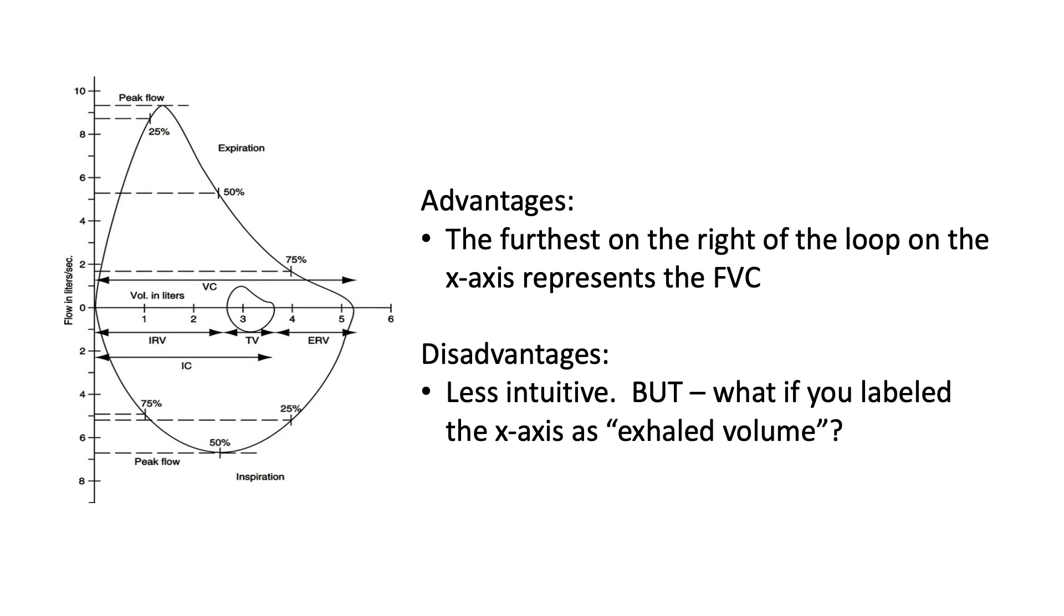And finally, let's consider the zero on the left side of the graph. The advantage here is that now with this display, the furthest point on the x-axis where the flow volume loop crosses the x-axis represents the forced vital capacity. That's the volume in the lung that can be breathed out from total lung capacity all the way down to residual volume. The disadvantage here is that it's a little less intuitive. Now, total lung capacity is at the zero point on the x-axis. But what if you labeled the x-axis in this case as the exhaled volume? So at total lung capacity, the exhaled volume would be zero. And at the point of residual volume, the exhaled volume would be complete and would be the forced vital capacity.